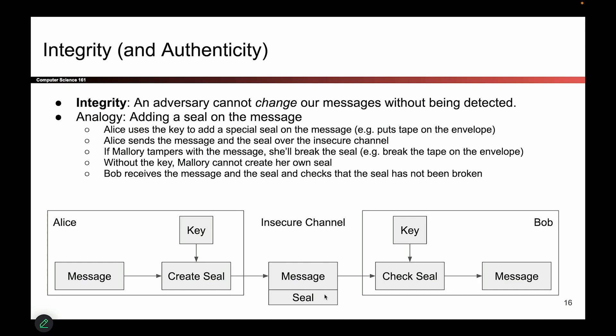Think of placing the message in an envelope with a special piece of Alice tape that nobody else can create. Bob receives the message with the special Alice tape on it, opens the seal to reveal the message, and checks whether the seal is still the original Alice tape. If Mallory tries to tamper with the message, she has to break the seal, so Alice's tape no longer looks in its original clean form. Bob sees the broken seal and knows the message was tampered with.